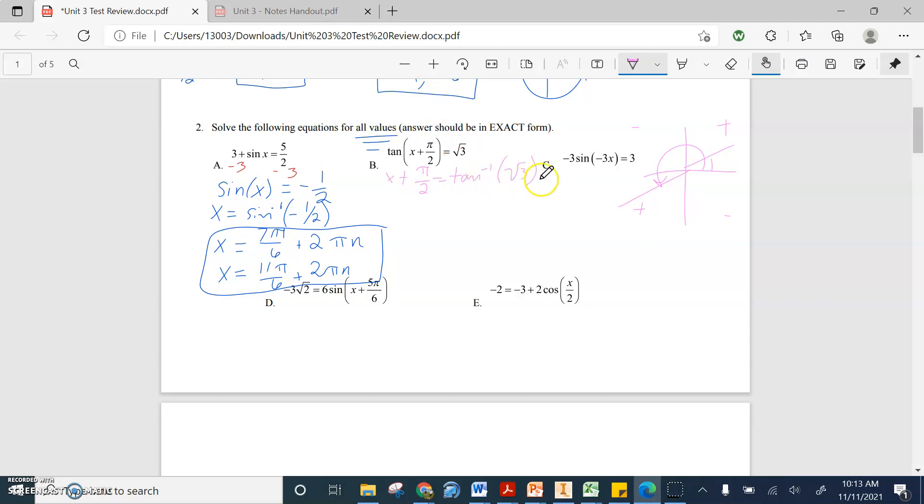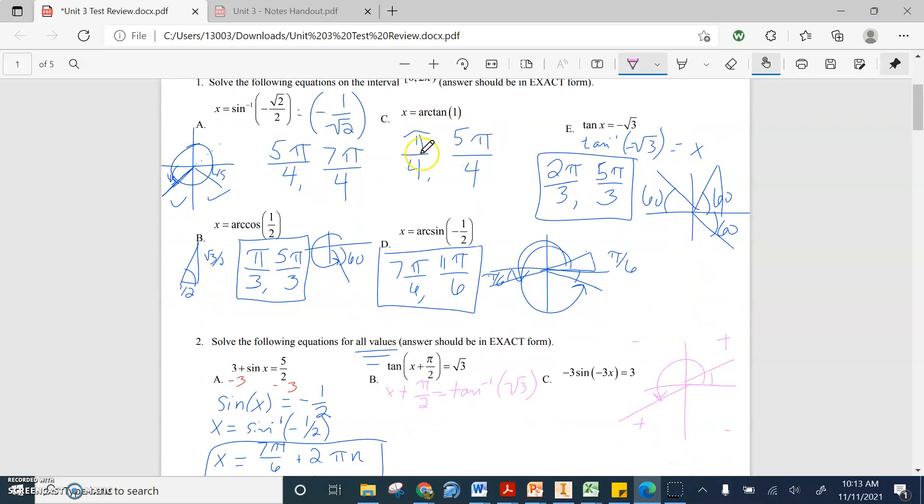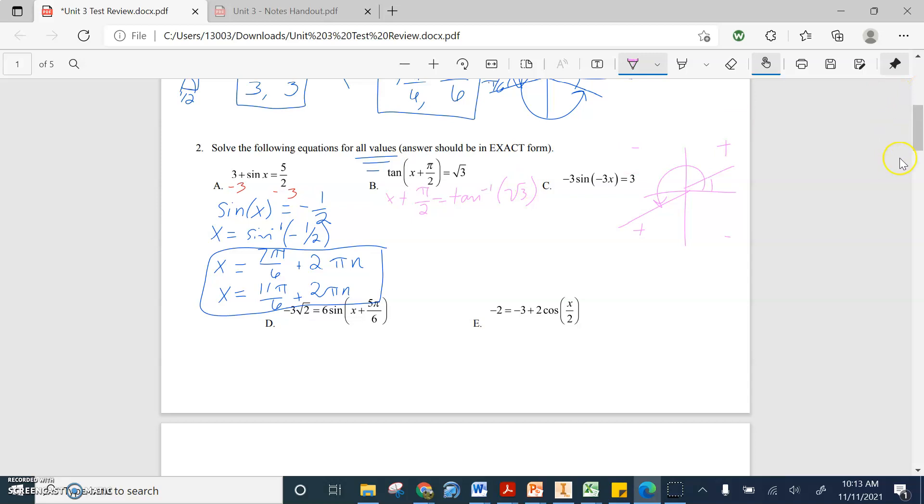So when I look for the arctan of square root of three, yes, I have two answers, like in c, I have two answers, in b, we're going to have one answer. Tangent, arctan of square root of three, x plus pi over two equals, arctan of root three becomes pi over three, right, because tangent's the bigger angle when it has the bigger value. So instead of saying plus two pi n, this is what I'm saying, plus pi n, because the other ratio is at pi.